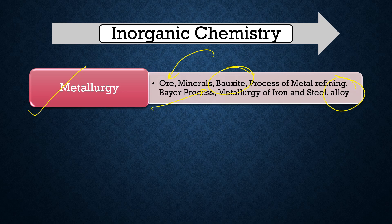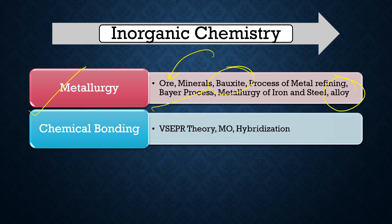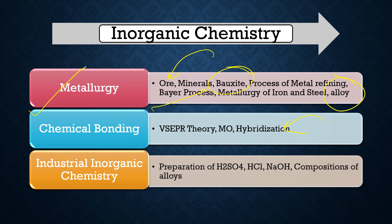The Bayer process is basically a process in metallurgy — metallurgy of iron, steel, and alloys. These are the few important topics for the metallurgy portion. Next is chemical bonding. In chemical bonding you have to learn about VSEPR theory, molecular orbital theory, and hybridization. A video regarding the determination of the structure of a molecule is available in the YouTube channel 'Kashan Sastri' — the link will be in the description.